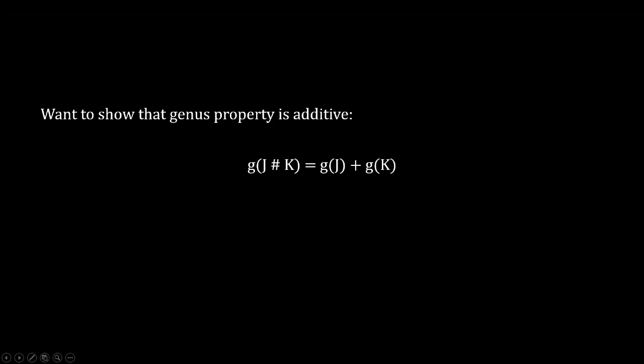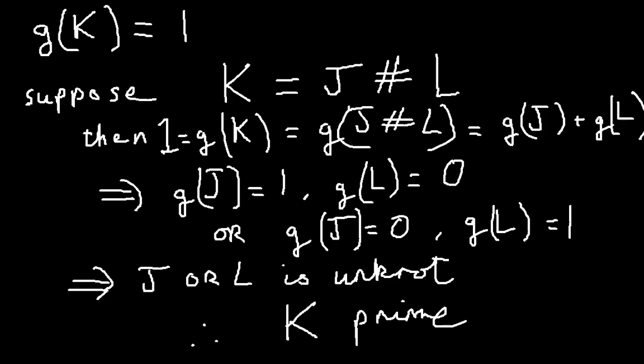We'd like to show that the genus is additive when we take the connected sum of two knots, that the genus of J connected to K equals the genus of J plus the genus of K. For example, once we've proven that the genus is additive, we have an easy proof that knots of genus 1 are prime. Since the only knot that has genus 0 is the unknot, and genus is otherwise positive, if the genus of K equals 1, and the genus of K also equals the sum of the genuses of L and J, then either the genus of L or the genus of J is 0, so is the unknot, which implies that K is prime. We have that the genus of the trefoil is 1, so we have again proved that the trefoil knot is prime.